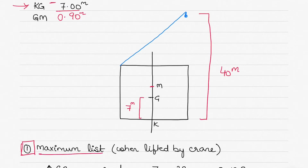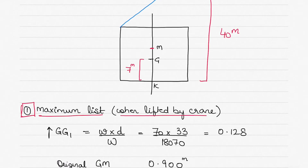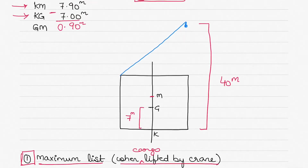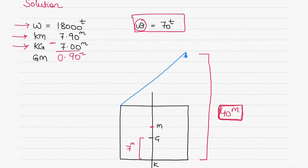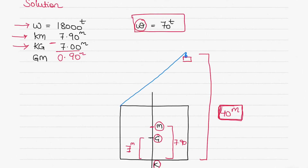The first part of the question is finding the maximum list. This happens when the cargo is lifted by the crane. The height of the crane head is given as 40 meters above keel. In the diagram, keel is shown by the letter K, center of gravity by G, and the metacenter by M. The KG given is 7 meters and KM is 7.9 meters.